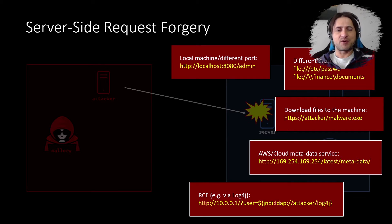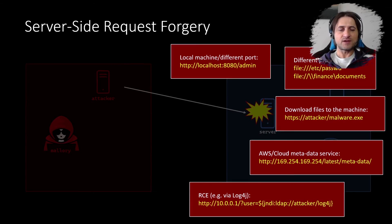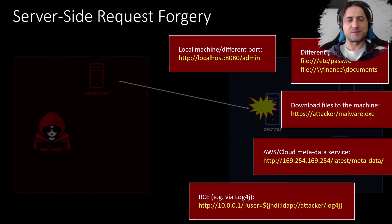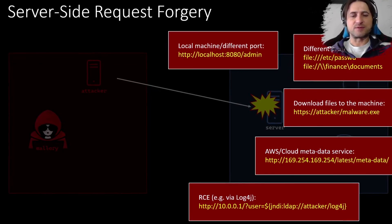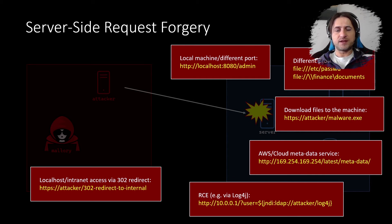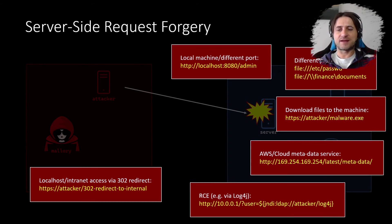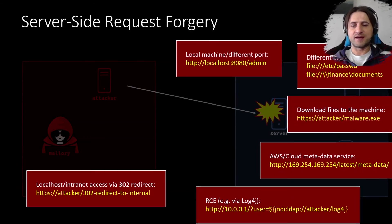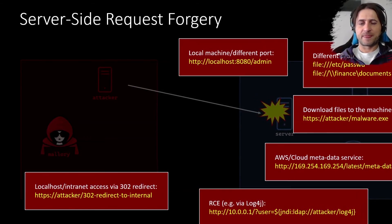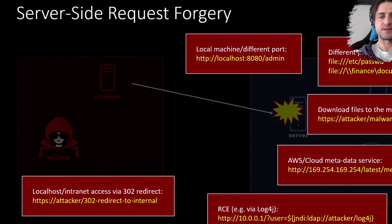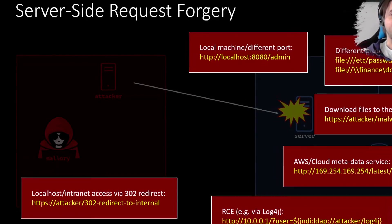A particularly interesting variation is remote code execution. For example, an attacker might issue a local command to an internal server and execute the Log4J exploit — which technically is itself a form of server-side request forgery — and that leads to remote code execution. Another example involves redirects that can be leveraged when there's a time-of-check versus time-of-use problem on the server. An attacker might redirect to localhost or to an external server, depending on what's allowed, gaining access that way. This is similar to DNS rebinding attacks.